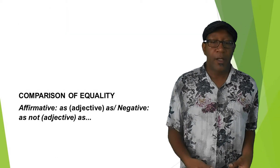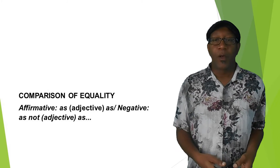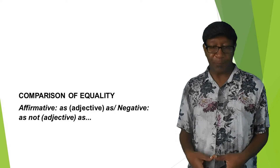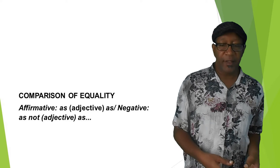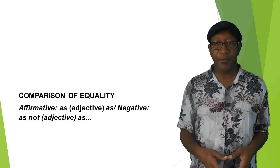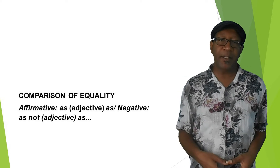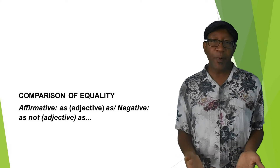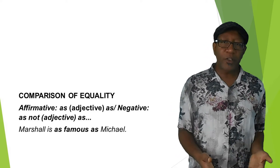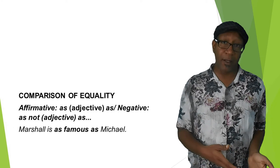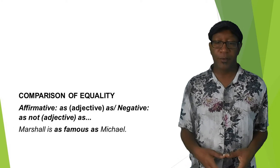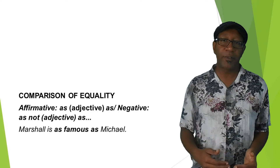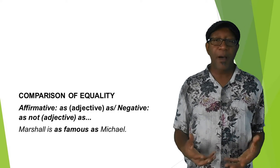We also have comparison of equality, when you have two elements that share the same amount of some quality. In the affirmative, you use: as — the adjective — as. And in the negative: as not — the adjective — as. Here are some examples: Marshall is not as famous as Michael — so both of them are famous, but Marshall is as famous as Michael. They have the same amount of this quality.